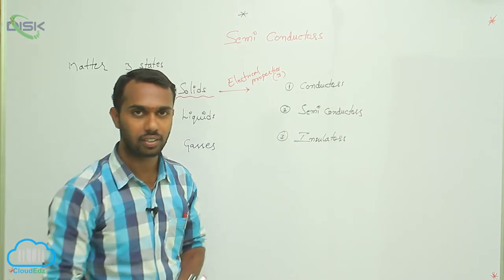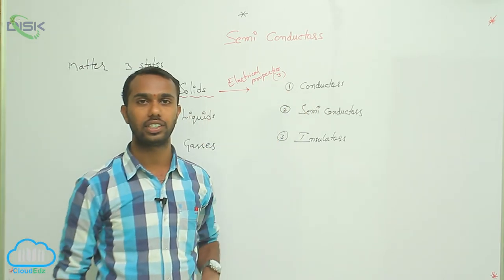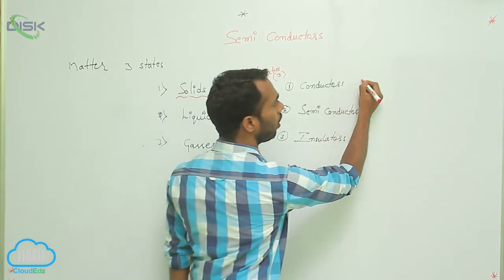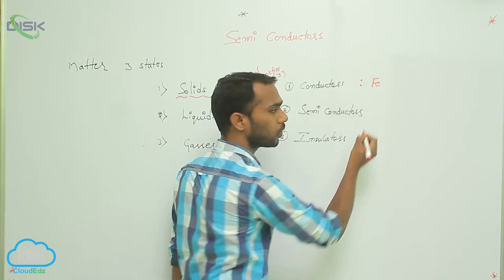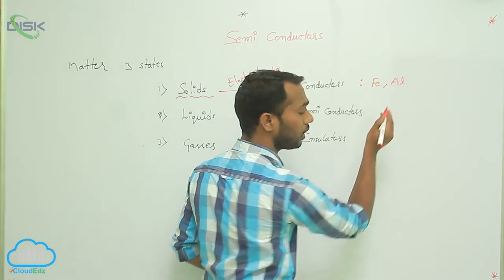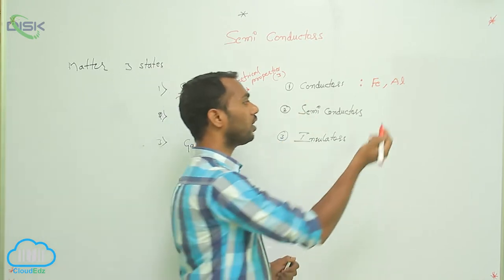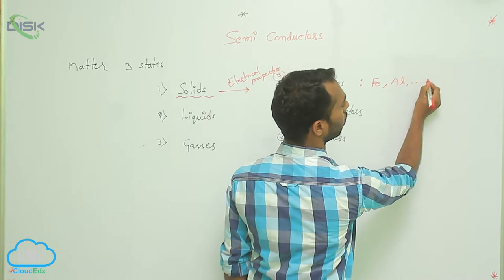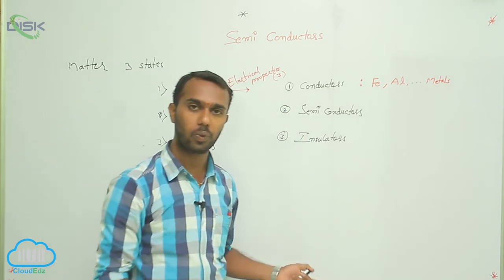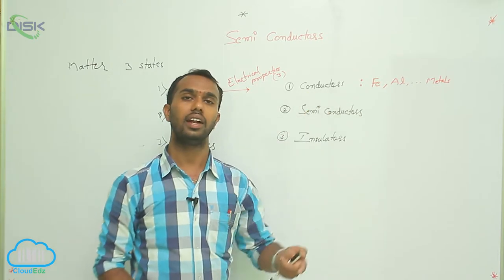What are conductors? Conductors are solids that accept current through them. For example, iron — iron can accept current through it, so iron is a conductor. Aluminum also allows current through it, so aluminum is also a conductor. All metals are conductors — that may be iron, aluminum, copper, and so on.